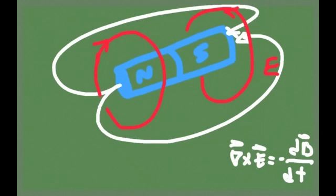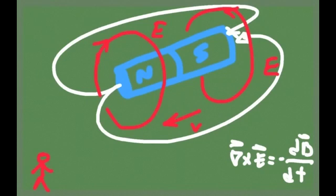So for an observer that sees the magnet moving with a certain velocity, for that observer there will be both an electric field and a magnetic field. This is how Faraday's equation establishes the connection between the electric field and the magnetic field.